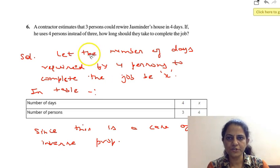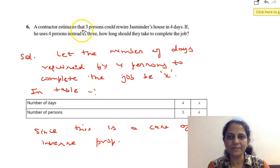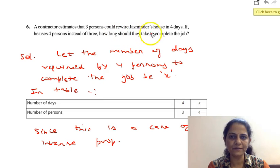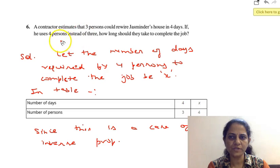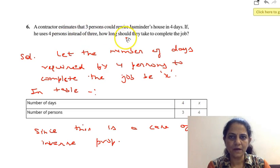The question is: a contractor estimates that 3 persons could rewire Jasminder's house in 4 days. If he uses 4 persons instead of 3, how long should they take to complete the job?